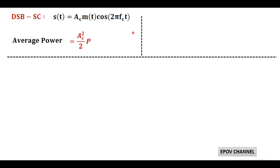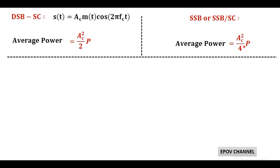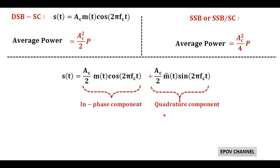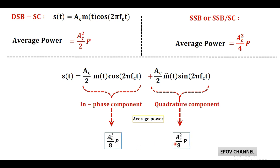On a comparison basis, the double sideband suppressed carrier wave is given by s(t) = ac · m(t) · cos(2π f_c t), and its average power is ac²/2 · P, where P is the average message power. Therefore, the average power in single sideband suppressed carrier is just half of the DSB-SC. So for SSB, the average power becomes ac²/4 · P. Since SSB contains in-phase and quadrature components with the same average power, the average power of each component is ac²/8 · P.